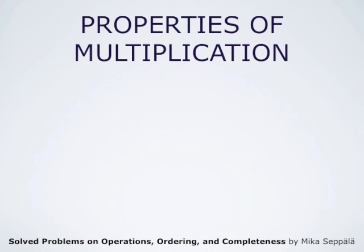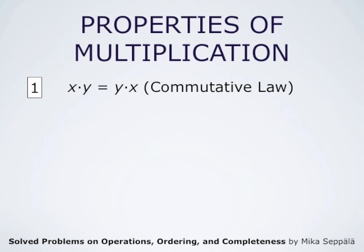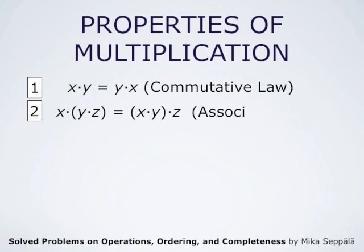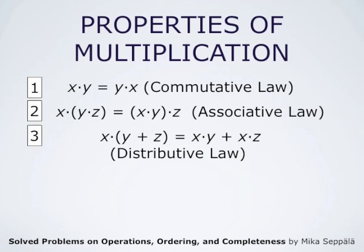Multiplication has similar properties to addition. First, it is commutative so that x times y is always y times x. Secondly, it is associative: x times y, multiplied by z, equals x times (y times z). Multiplication is distributive with respect to addition so that x times (y plus z) equals x times y plus x times z.